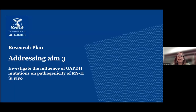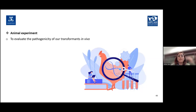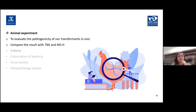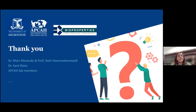For Aim 3, I'm going to investigate the influence of GAPDH mutations on pathogenicity of MSH in vivo by doing an animal experiment to evaluate the pathogenicity of the transformants from the previous aim, with comparison groups inoculated with 7NS and MSH. Key outcomes we are assessing are bacterial colonization — where and how much bacteria colonize — and gross and histopathology lesions.